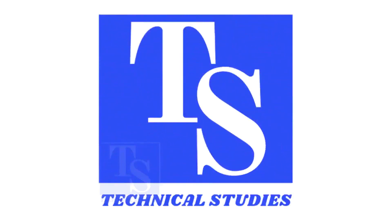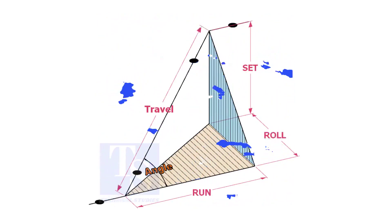Welcome to technical studies. In a piping drawing of a double rolled offset, usually the dimensions of the run, set, and roll are given.